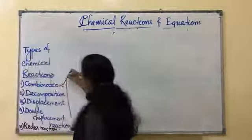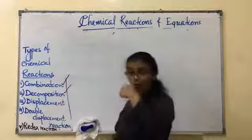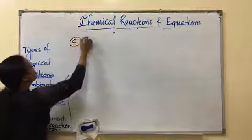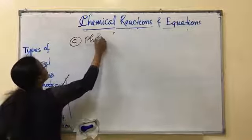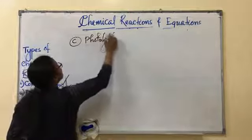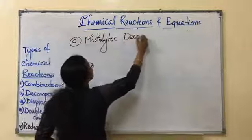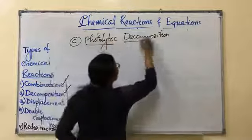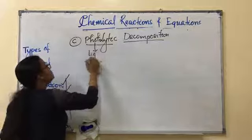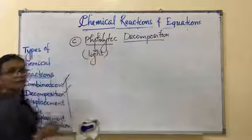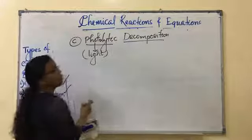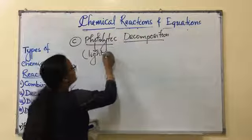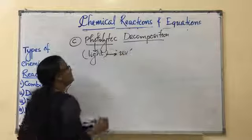So we discussed about combination reactions and decomposition. In the two decomposition reactions we discussed thermal decomposition and electrolytic decomposition. Now the third category of decomposition is photolytic decomposition. Photolytic decomposition means the decomposition in presence of or decomposition due to photo. Photo means what? Light. Normally for photolysis the light in the form of UV radiation we will be passing through.